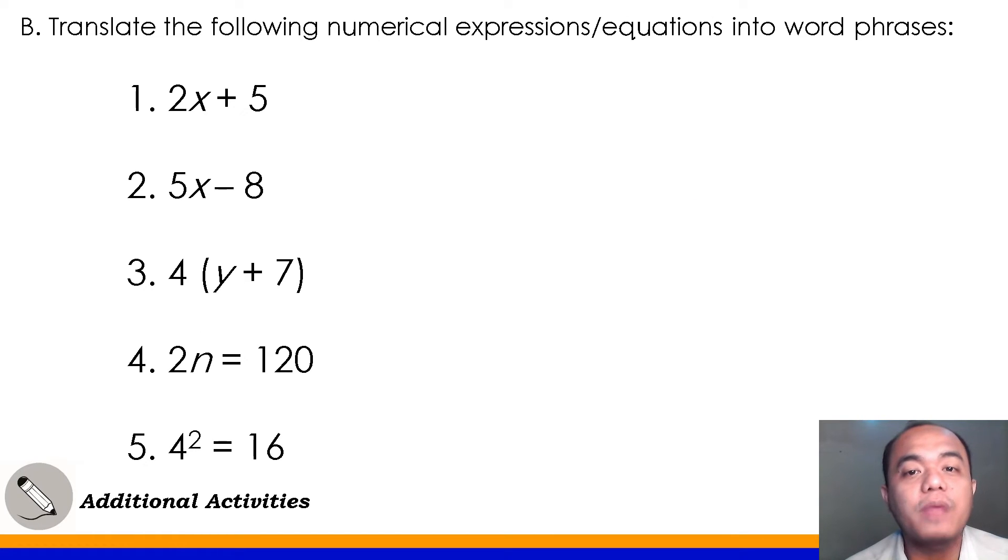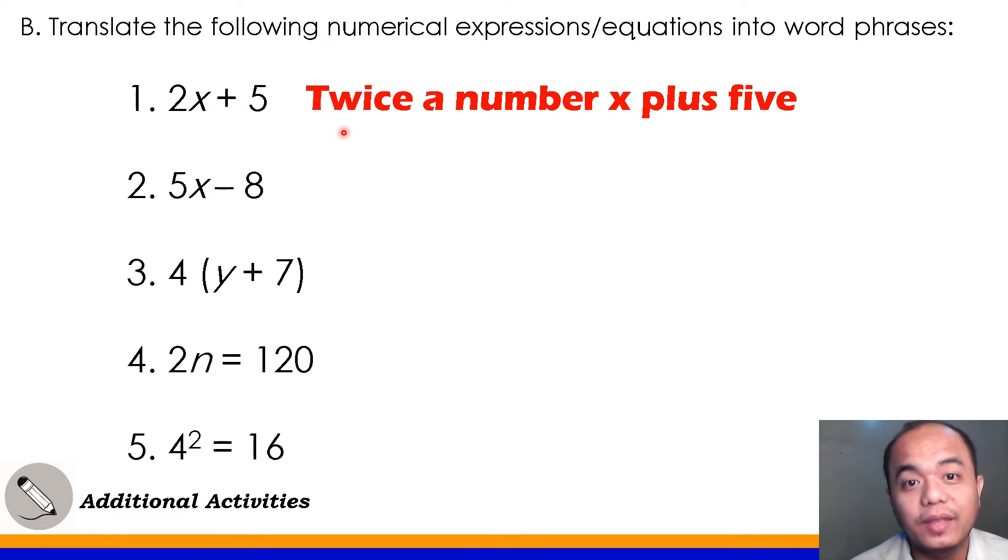Letter B, translate the following numerical expressions or equations into word phrases. This time, we'll do the opposite. So, number 1, very good! It's twice a number X plus 5. But this is just a possible answer because you can use other words associated with addition and multiplication, right? You could also say the product of 2 and X added to 5. What I wrote here is just a possible answer. Understood? Very good!